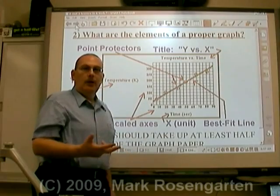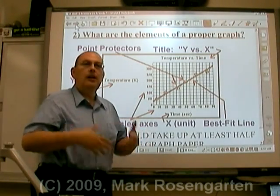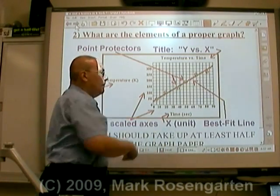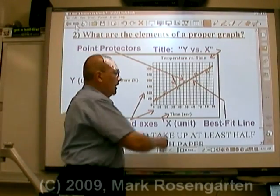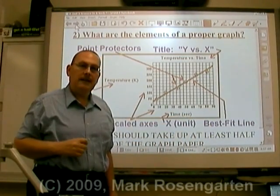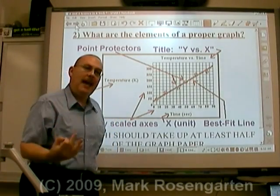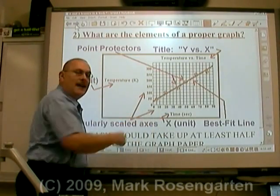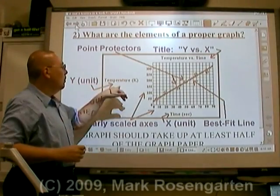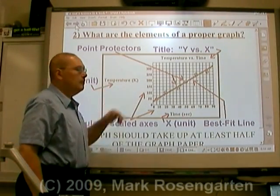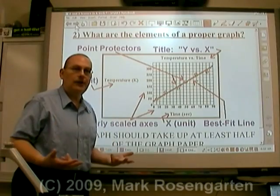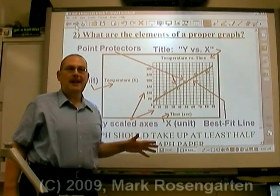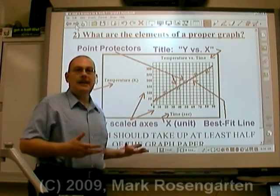The other variable is what changes depending on the variable that you've just controlled. For example, temperature over time — we're going to let an experiment go over a certain period of time, so time will be the independent variable, and the temperature will depend on how long we let that reaction sit. So the temperature is dependent on time, and the y-axis will have the dependent variable — the variable that changes as a result of the experimenter changing the independent variable. All other variables should remain constant to avoid contaminating your results.